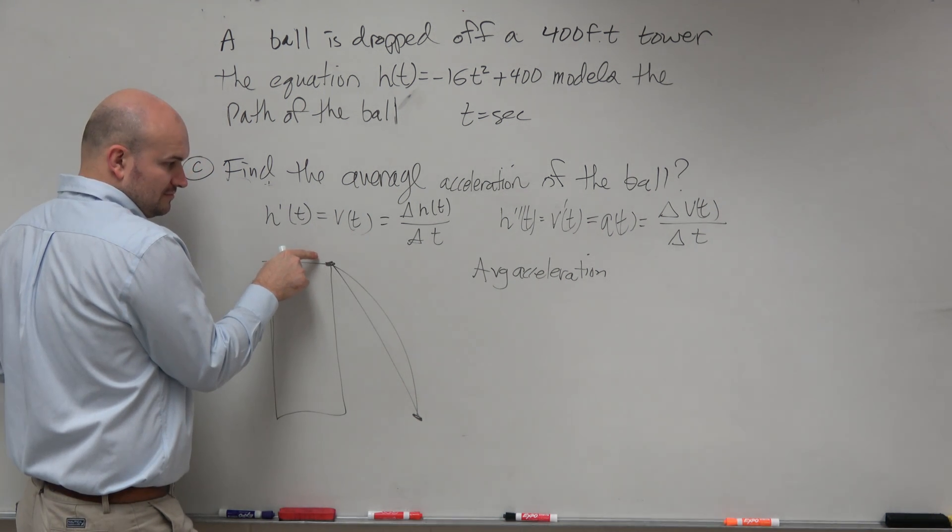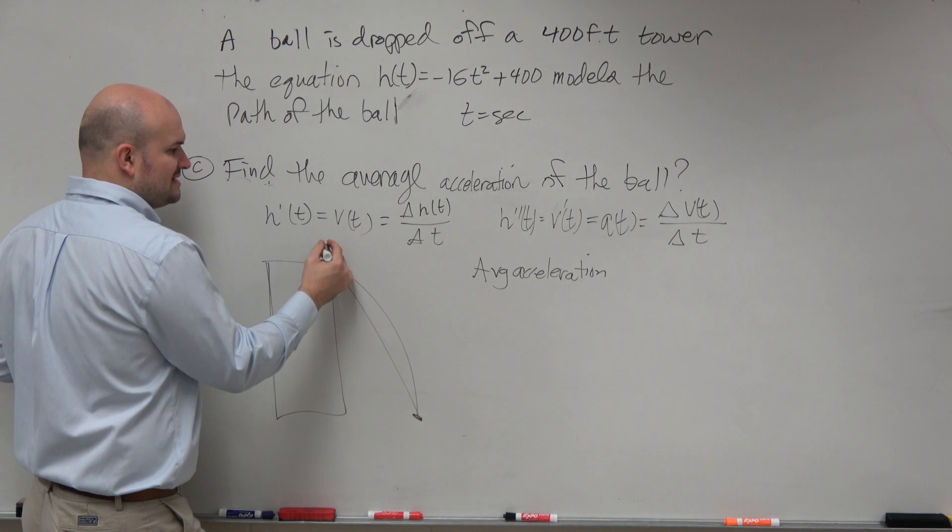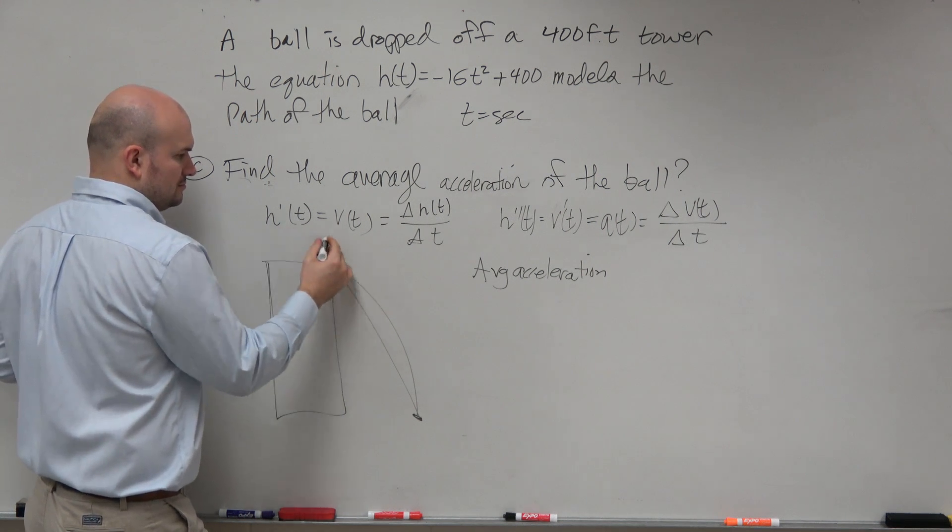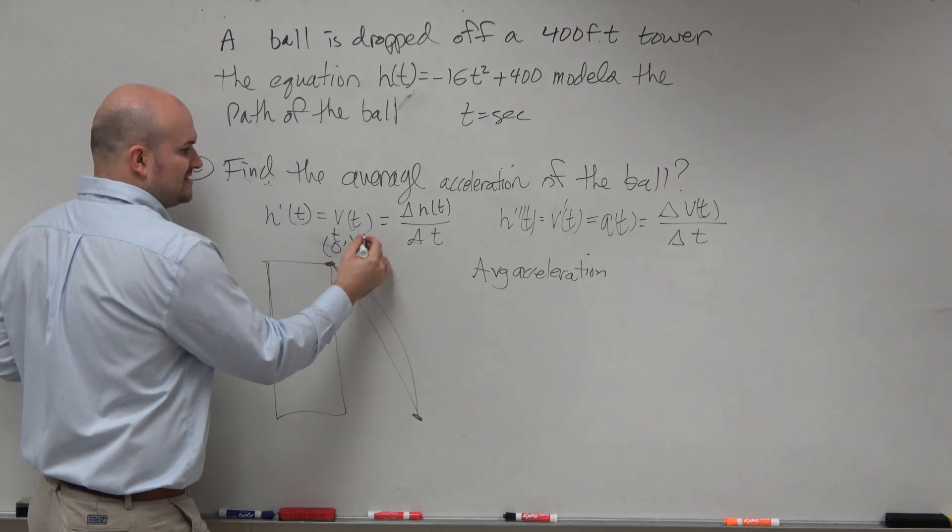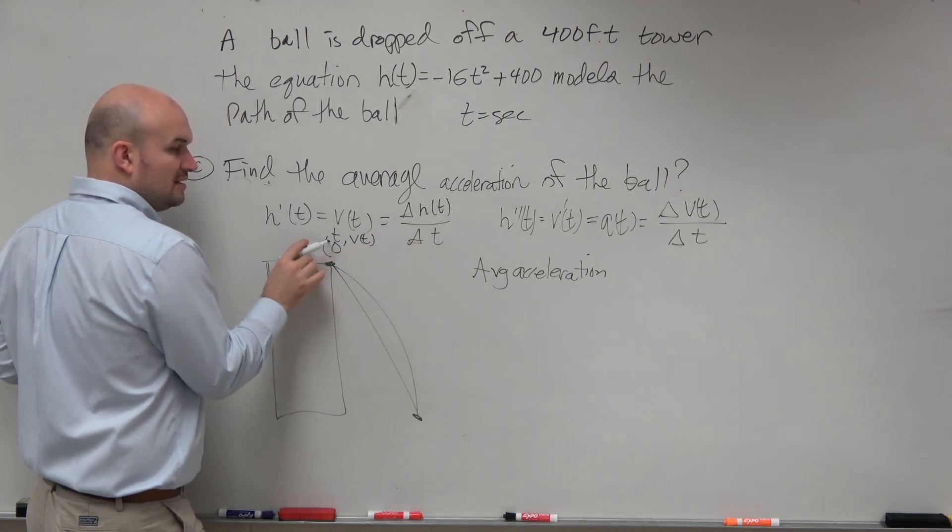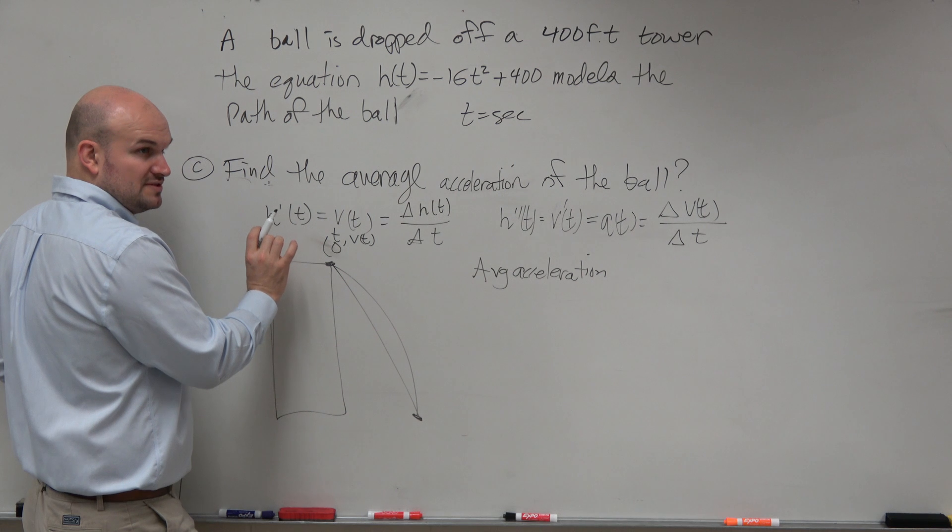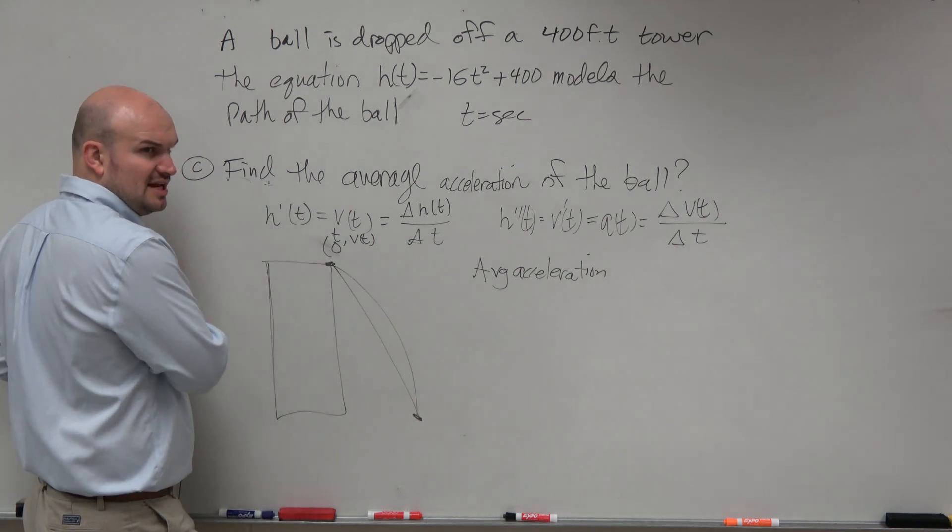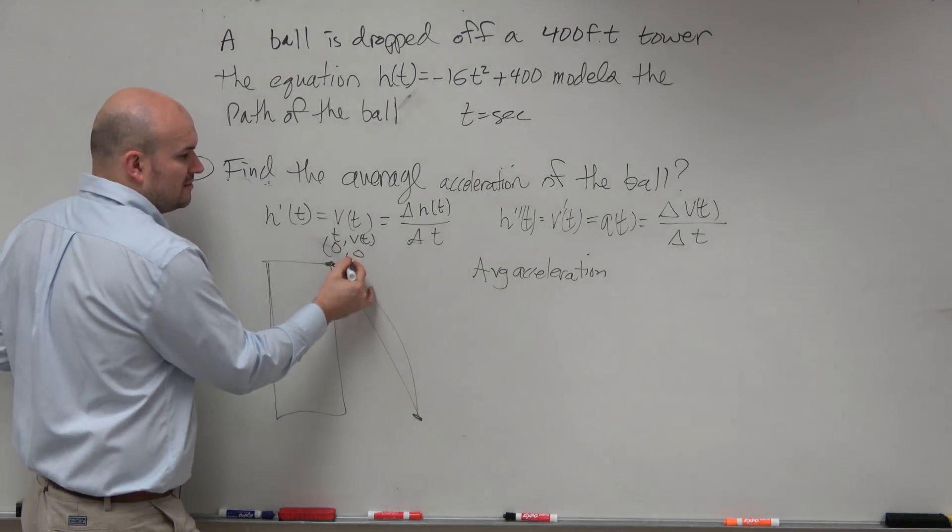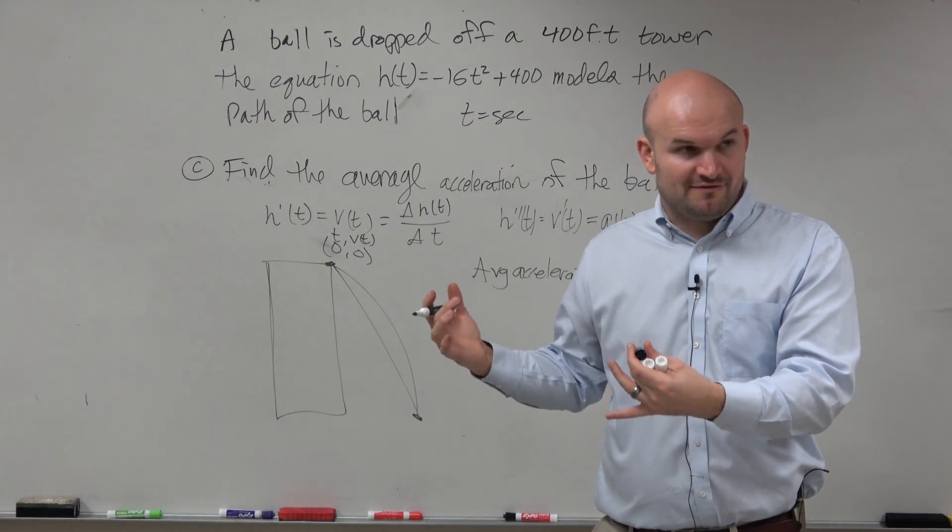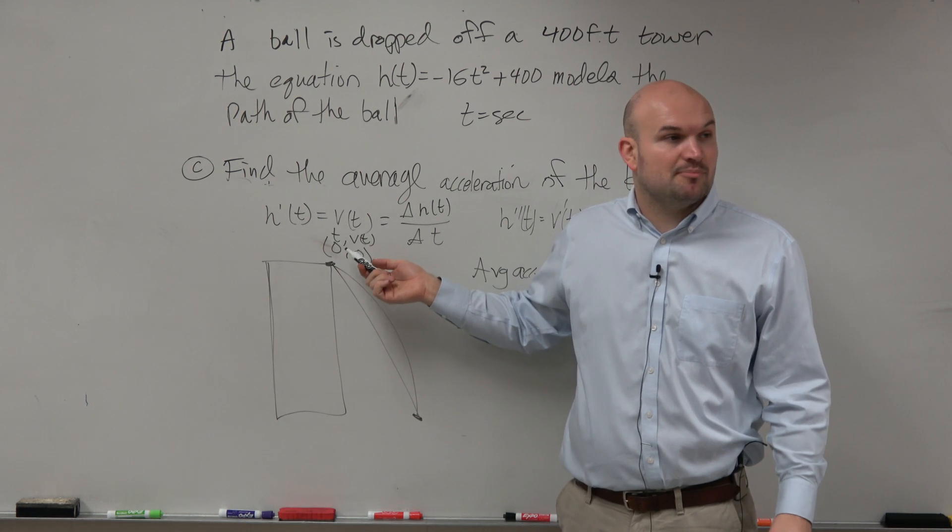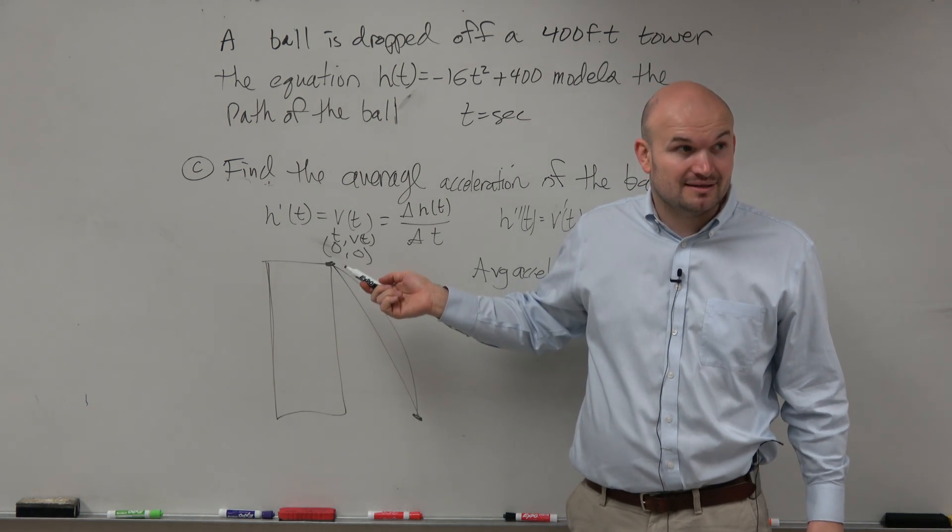Now, at time 0, remember this is (t, v(t)). Time is 0, the ball hasn't moved. If the ball hasn't moved, then what's its velocity? Zero. Don't get confused with the position graph. This is not a point of position, this is a point of velocity.